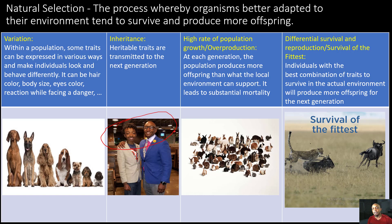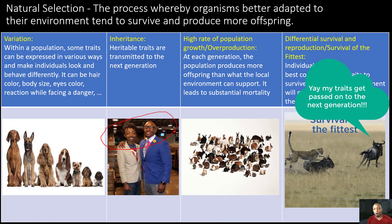Speaking of survival of the fittest, the fourth key principle is differential survival and reproduction, also known as survival of the fittest. Individuals with the best combinations of traits to survive in the actual environment will produce more offspring for the next generation. Here's a cheetah chasing after two animals — one animal is going to be faster than the other. The slower animal is probably going to end up as the cheetah's lunch, while the faster animal will survive and has a higher likelihood of passing its traits on to its offspring.